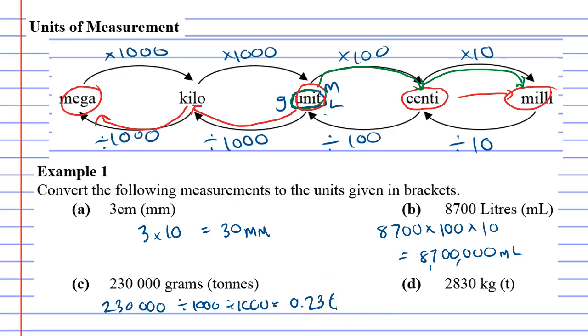Looking at our last example, question D, we're converting 2,830 kilograms to tons. Going from kilograms to megagrams tells me to divide by a thousand. So 2,830 divided by a thousand equals 2.83 tons.